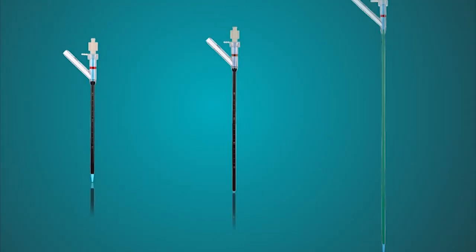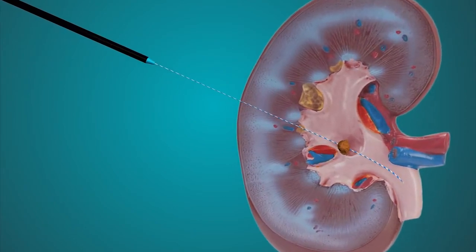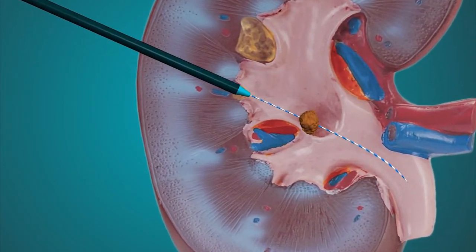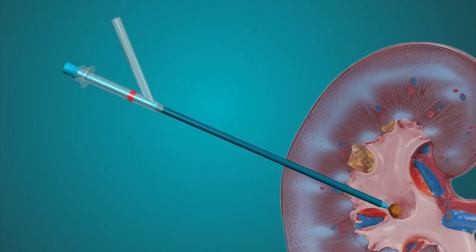Advance the percutaneous access sheath over a guide wire until it is within one centimeter distance to the stone. Remove the obturator and place the rubber cap on the proximal straight end.